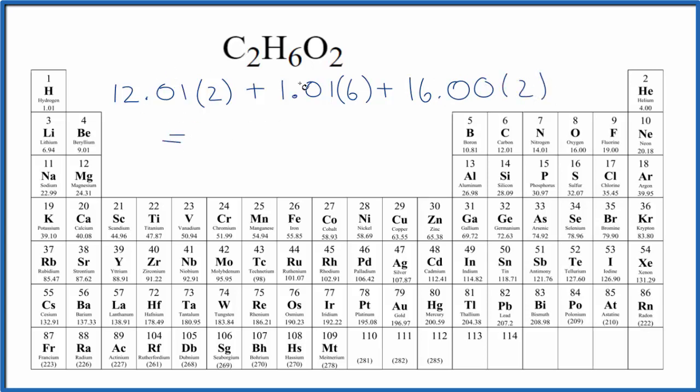So we'll do the multiplication first, add all these numbers together, and we end up with 62.08, and the units are grams per mole.